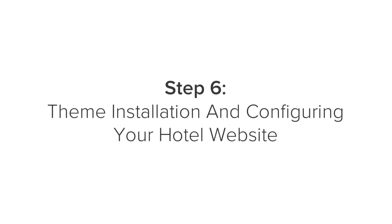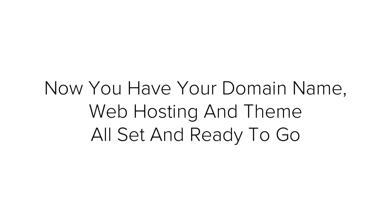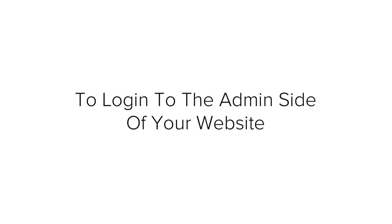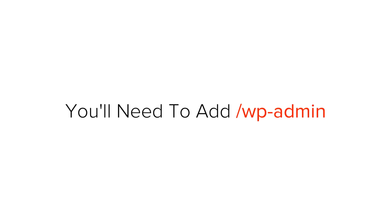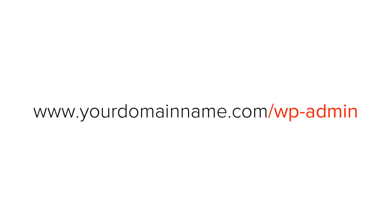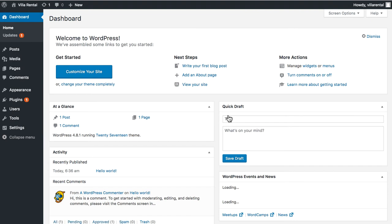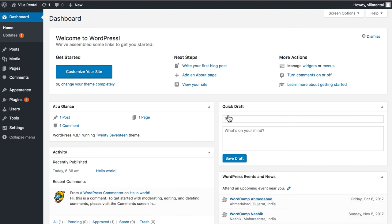Step six is theme installation and configuring your hotel website. Now you have your domain name, web host, and theme all set up and ready to go. To log in to the admin side of your website, add '/wp-admin' to the end of your domain name. This is the login page — enter the username and password that you created while installing WordPress. Once you log in, you'll see a dashboard — this is where you can manage your website from.